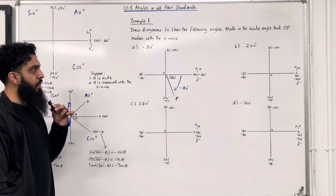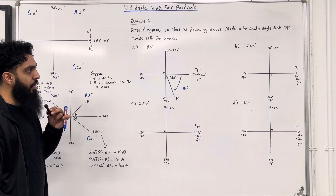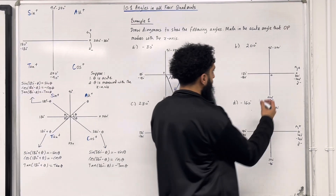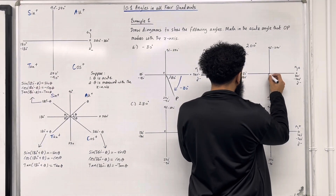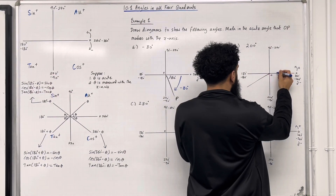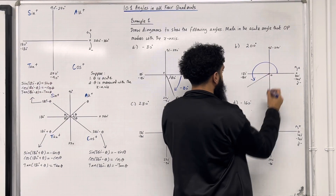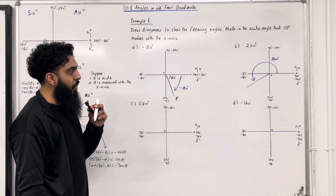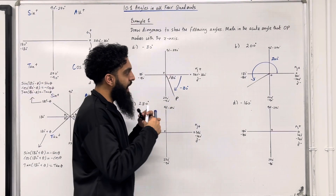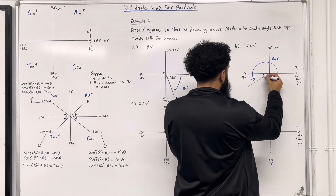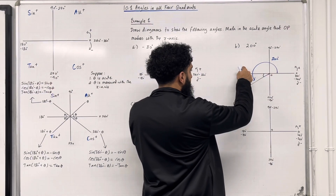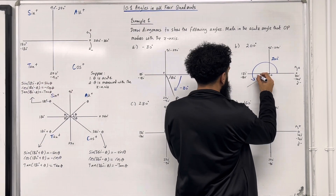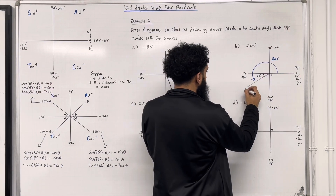Part B: 200 degrees. A positive angle, so we go anti-clockwise from the positive x-axis. 200 degrees looks something like this, measured from the positive x-axis. The acute angle with the x-axis: we know this part is 180, so the acute angle is 200 take away 180, which is 20 degrees. Here is the line O to P.